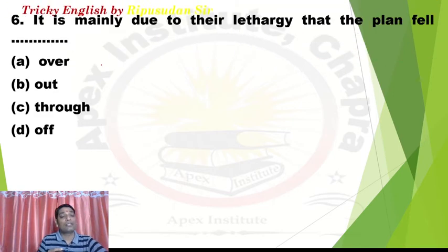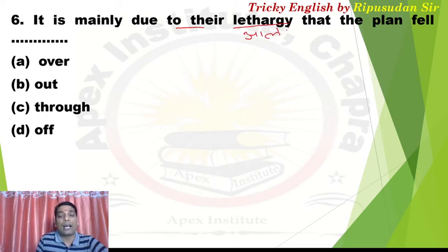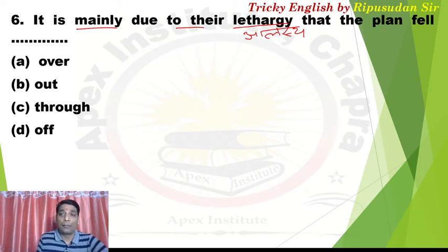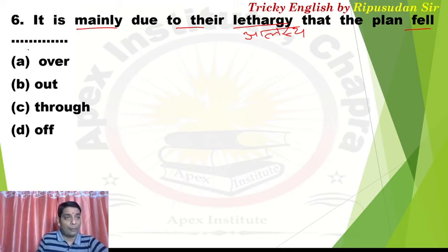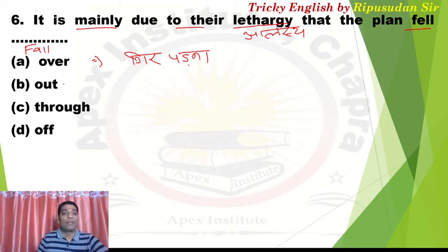Question 6: 'It is mainly due to their lethargy that the plan failed.' Lethargy means laziness or sluggishness. Mainly due to their lethargy — the plan dashed. The verb here is 'fall'. 'Fall over' means to topple — when someone loses balance and falls. Whenever someone falls due to loss of balance, we use 'fall over'. 'Fall out' means to jump on someone in an attacking mood, or to pounce on an animal.